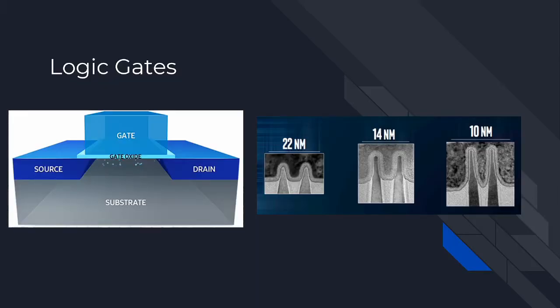Transistors are semiconductor devices that are used as a fundamental unit for computing, amplification, and a number of other electronic applications. Shown on the right is the progression of transistors used in computing. There is an atomic limit in our ability to shrink these devices, leading to research in other forms of computing, like in fields of spintronics.